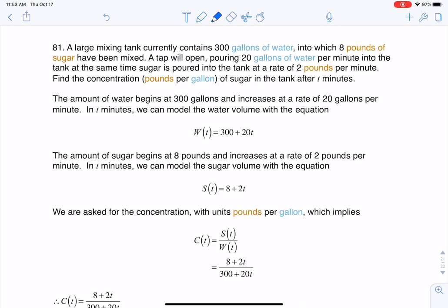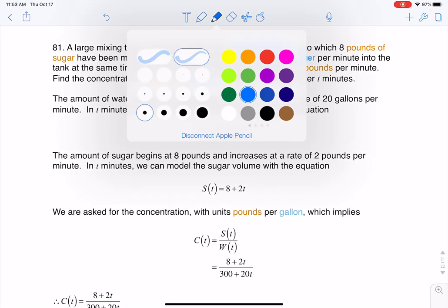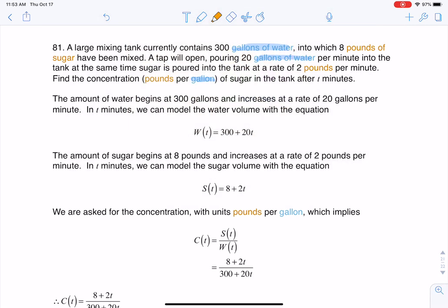So a large mixing tank currently contains 300 gallons of water. I want to highlight those units. You can see there's going to be gallons of water here and here. Now I'm going to change to orange. Alright, so a large mixing tank currently contains 300 gallons of water into which 8 pounds of sugar have been mixed.